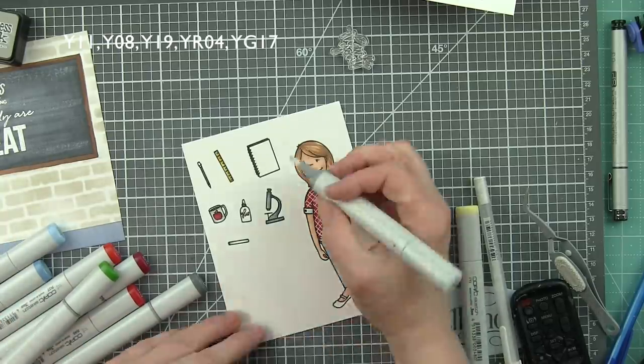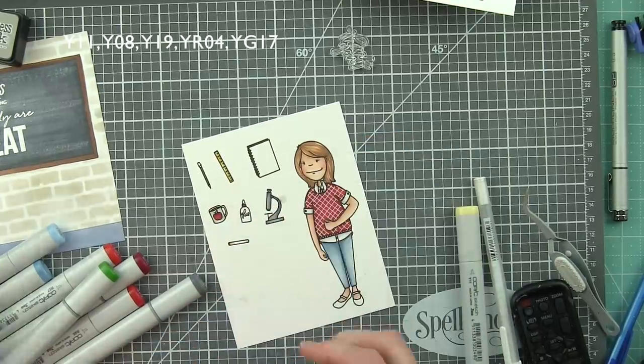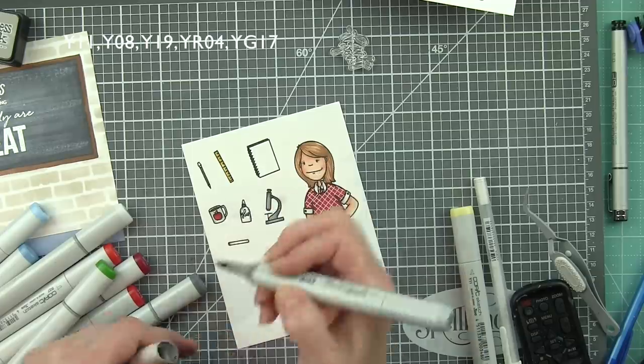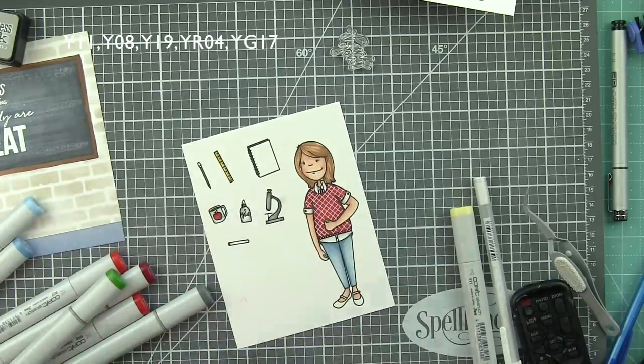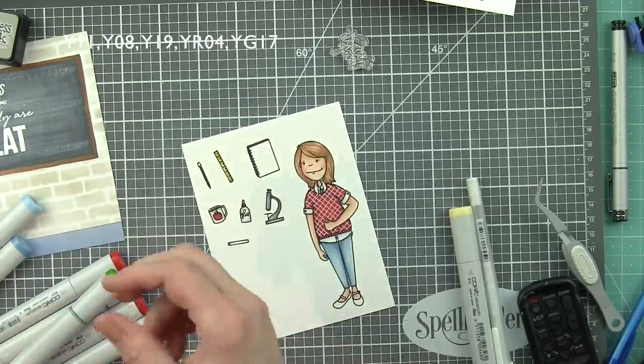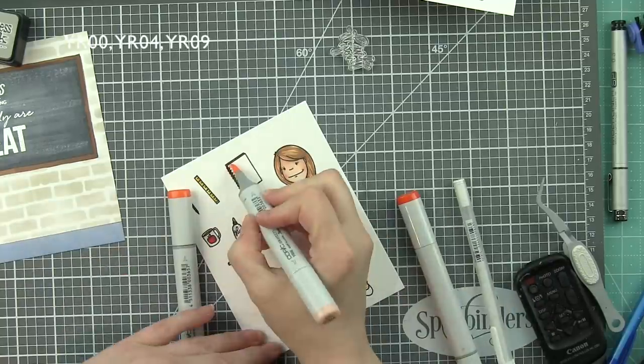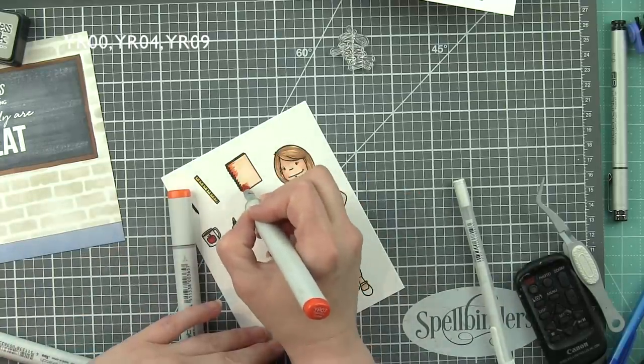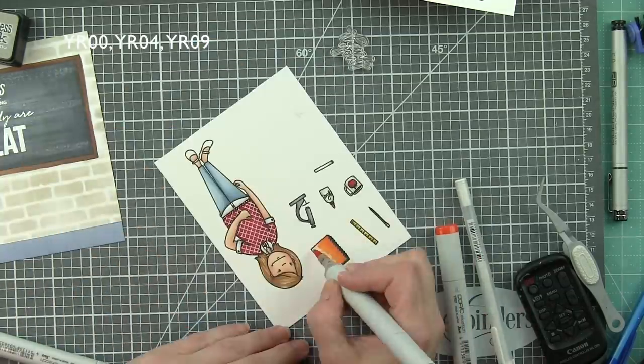And then her notebook, I felt like needed a little bit more color as well, instead of maybe some more of the neutrals that we've used for a lot of the other elements. And we're going to be having her hold on to a notebook, a ruler, and a pencil in her arm carrying all kinds of things. And I decided to go with some oranges here, something to break up the rest of the colors that we're using. So YR00, 4, and 9.